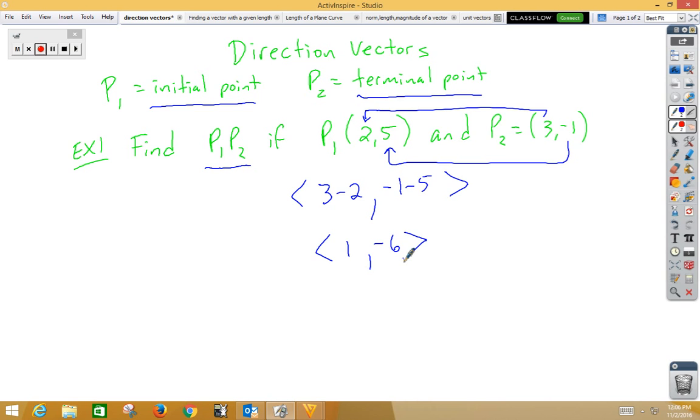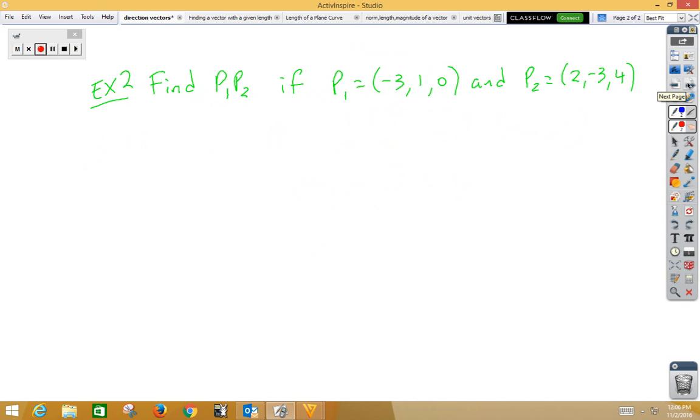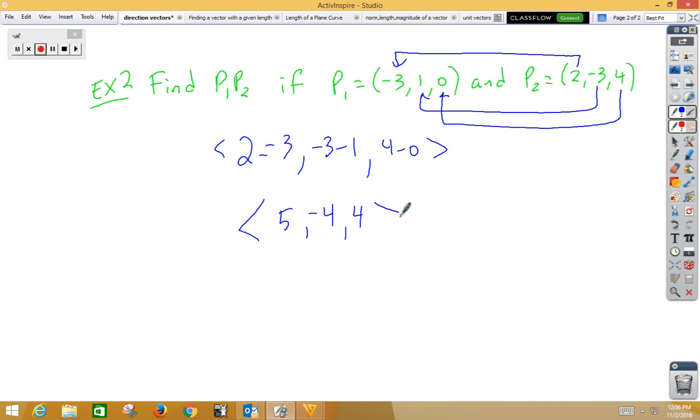Let's do one more. This time we're going to do it in 3-space. It's the same idea with 3-space. Order matters. So we're going to start by subtracting 2 minus negative 3, then negative 3 minus 1, and finally 4 minus 0. Again, this is a vector. We're going to put it in component form, so that's going to give us 5, negative 4, 4.